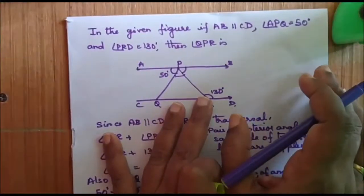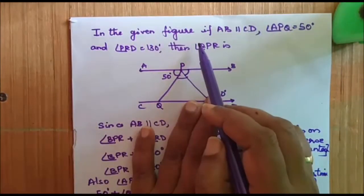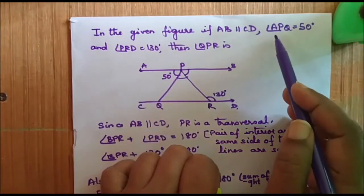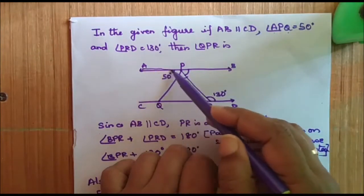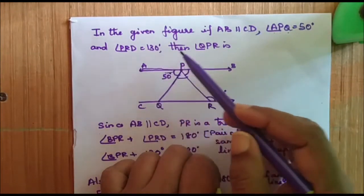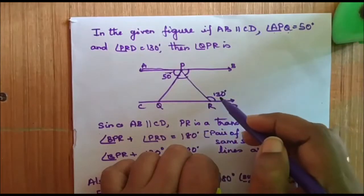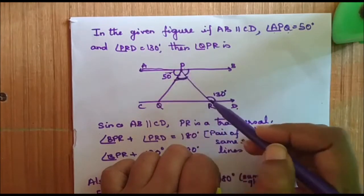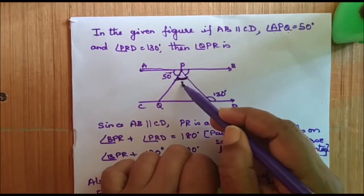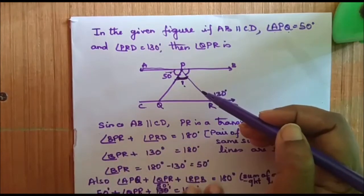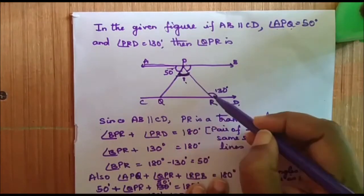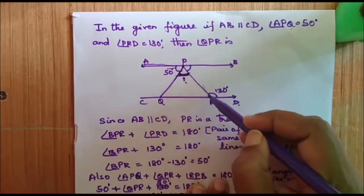Let us solve some problems to understand this concept better. In the given figure, if line AB is parallel to CD, angle APQ is equal to 50 degrees, and angle PRD is 130 degrees, then find angle QPR.